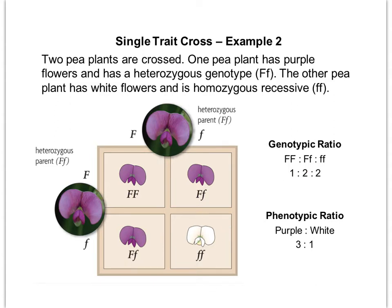The phenotypic ratio is actually what Mendel saw during his experiments — he saw a three to one ratio of dominant to recessive traits.